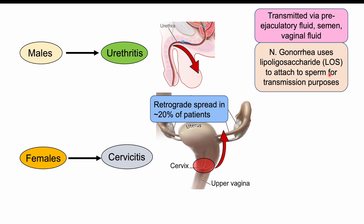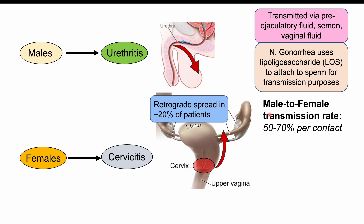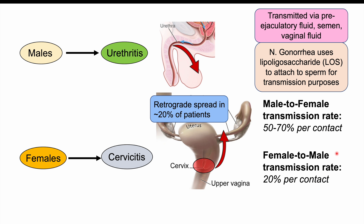The risk of acquiring gonorrhea depends on who is transmitting it. Male-to-female transmission occurs at a rate of 50–70% per contact, whereas female-to-male transmission is only about 20% per contact, partly due to the organism's ability to use sperm as a transmission mechanism. The incubation period is roughly 1 to 14 days, typically less than 10 days — the time between infection and symptom onset.